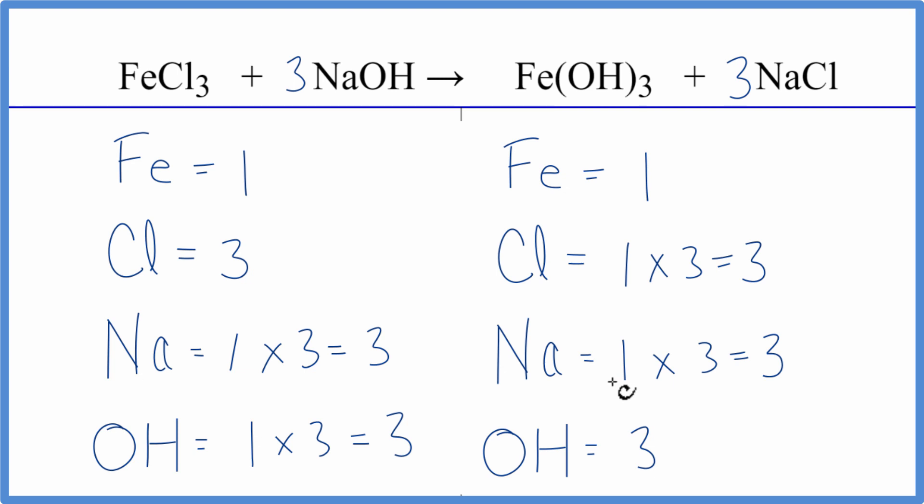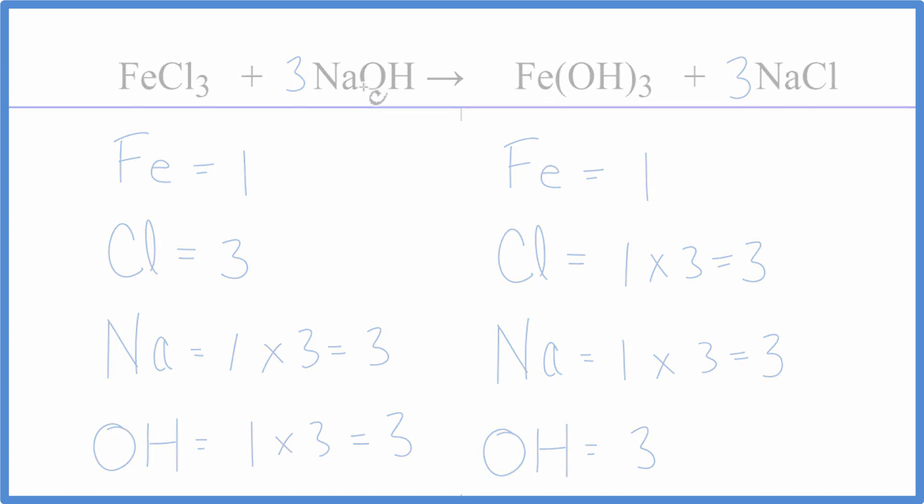This equation is balanced. So you can see it helps to consider these polyatomic ions as just one item if they appear on both sides. Makes the balancing a lot quicker and less prone to error. This is Dr. B with the balanced equation for FeCl3 plus NaOH. Thanks for watching.